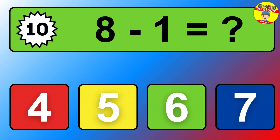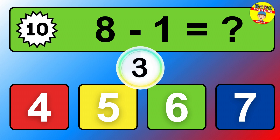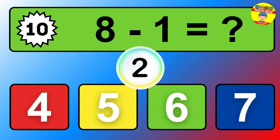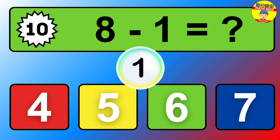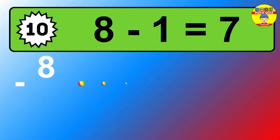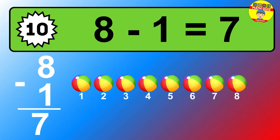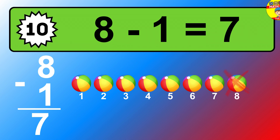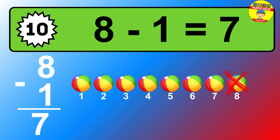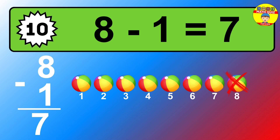Question ten: eight minus one equals what? So the answer is eight minus one is seven. Let's count it. One, two, three, four, five, six, seven.